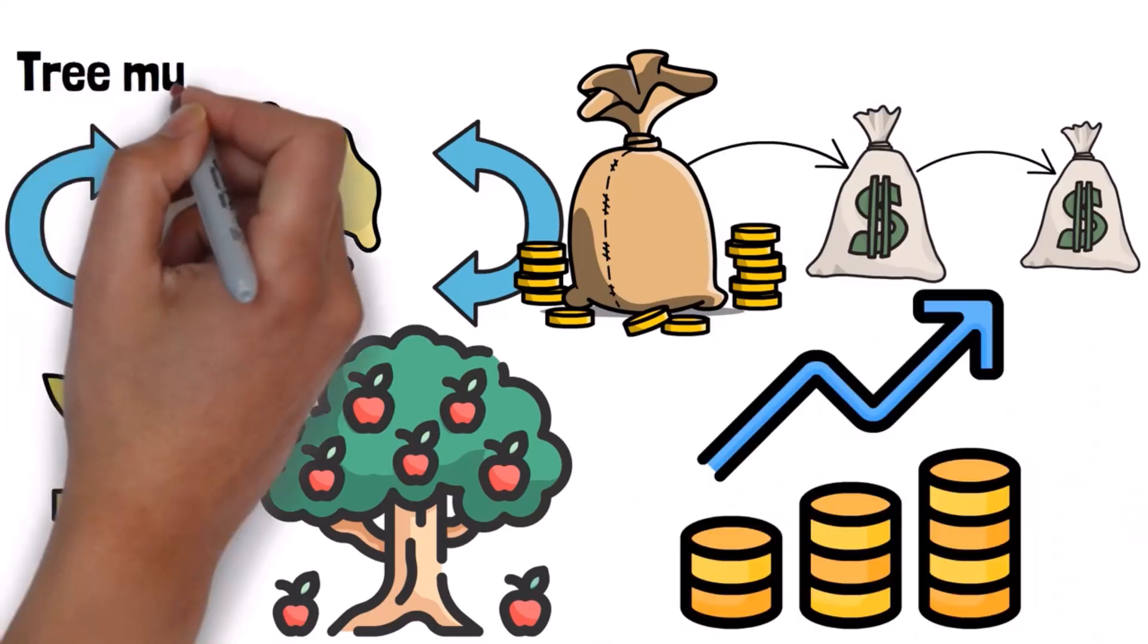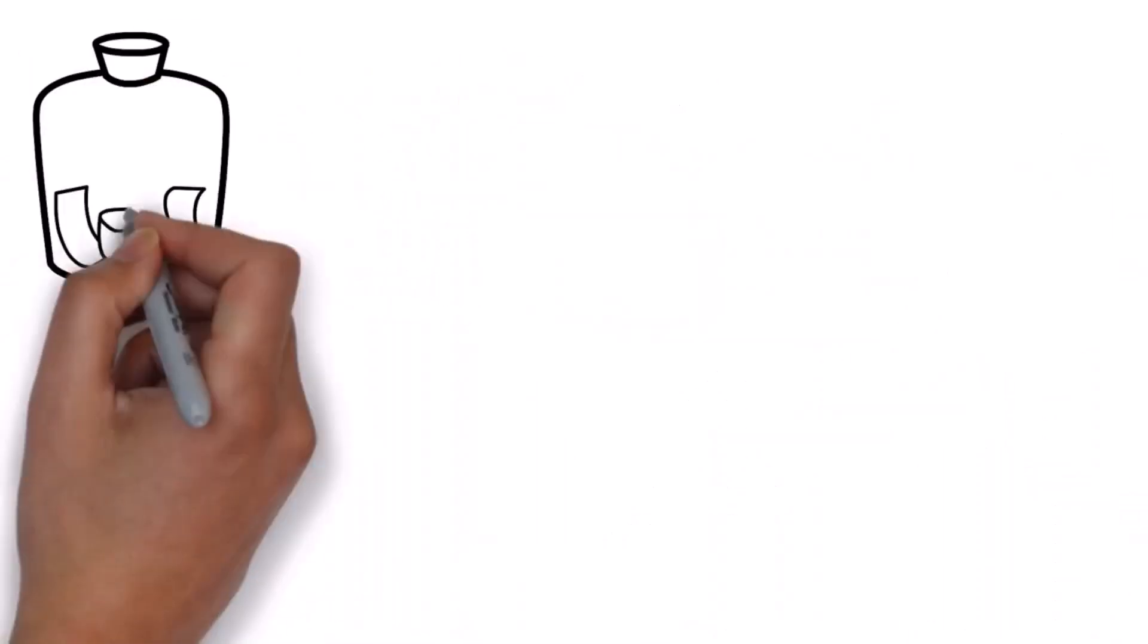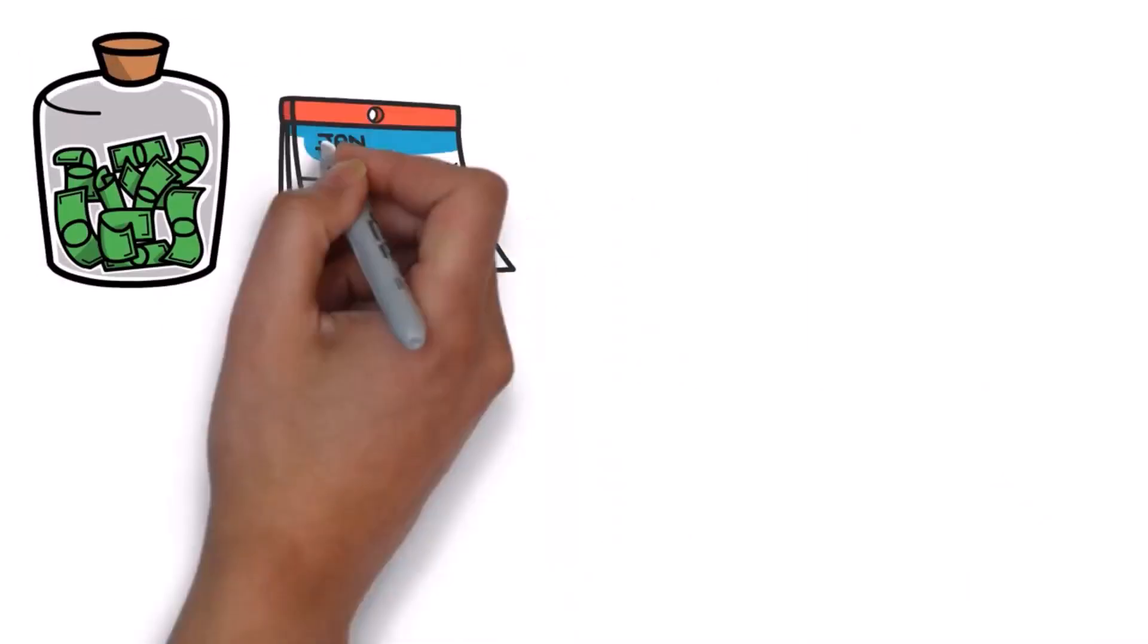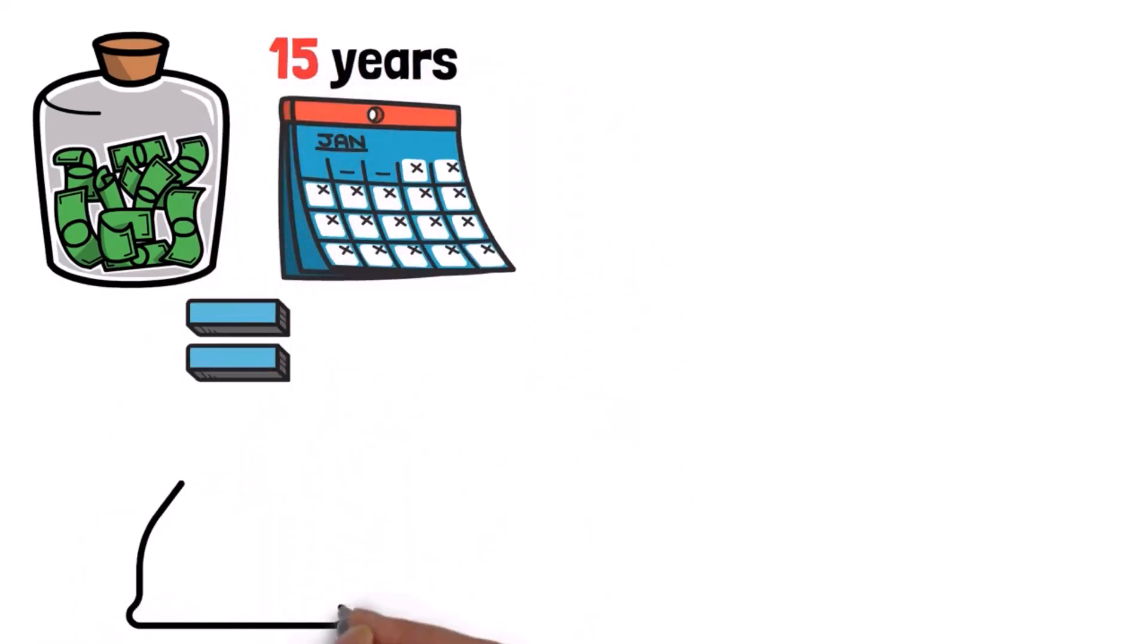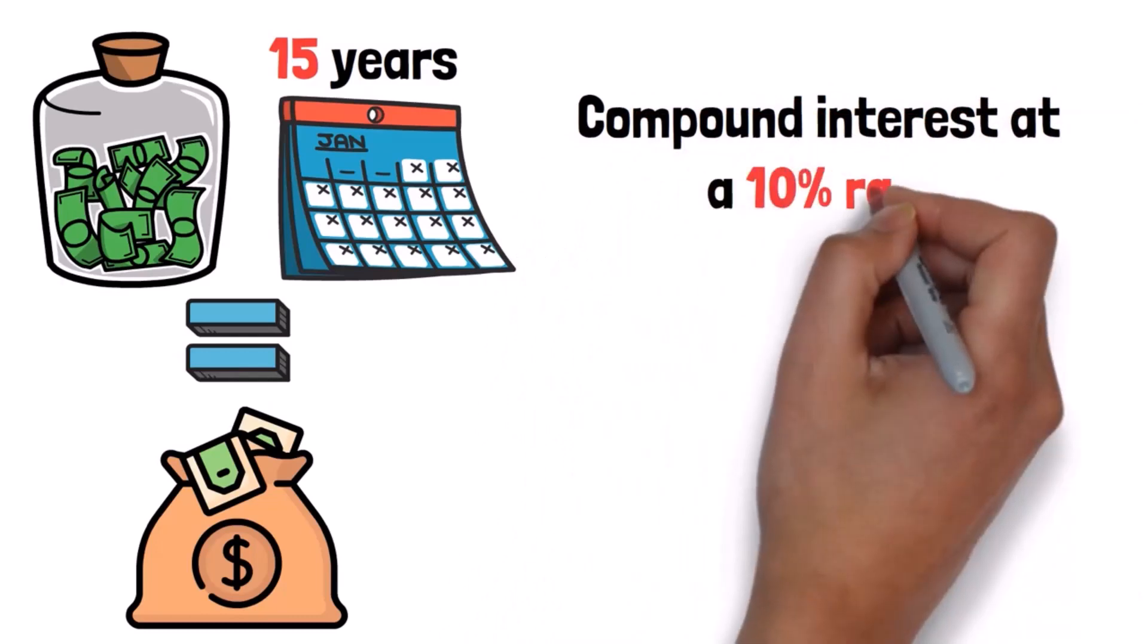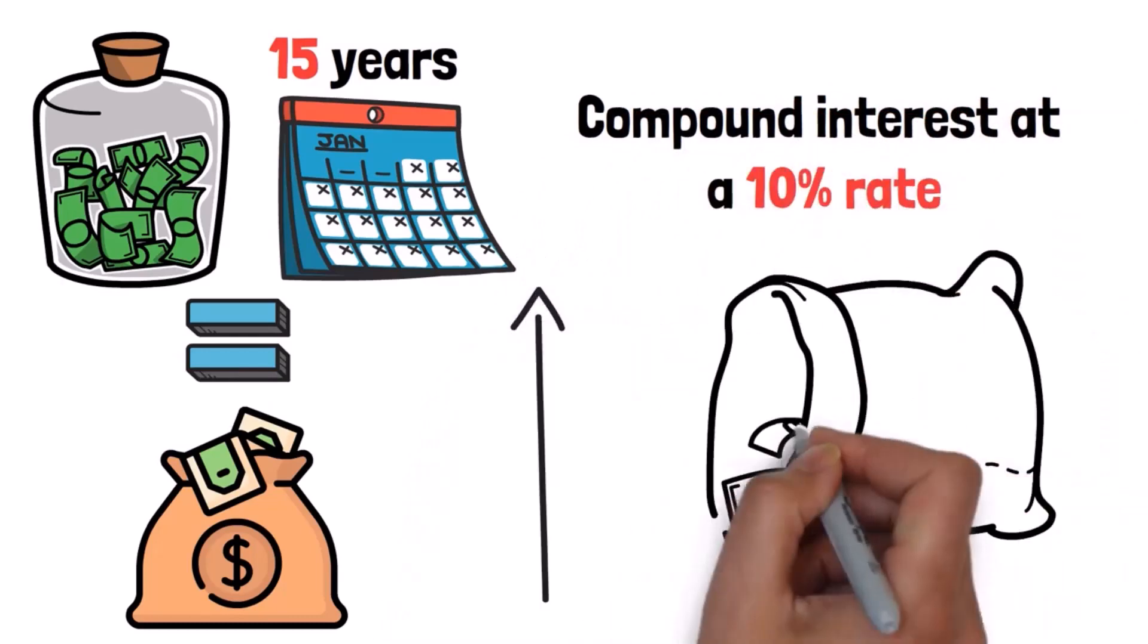For instance, if you put aside $50 every month for 15 years, you'd invest a total of $9,000. With compound interest at a 10% rate, your money would grow to more than $19,000 during that time.